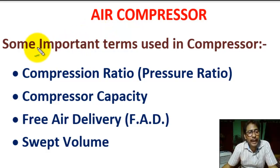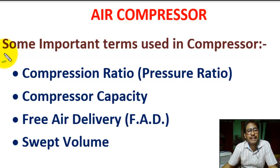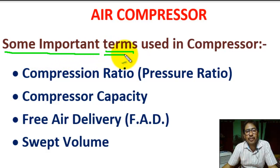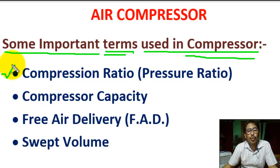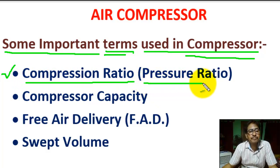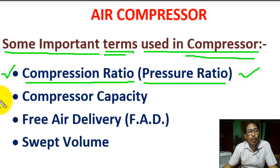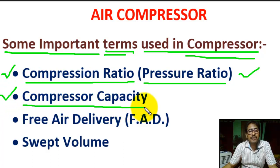Hello students. Today we are going to learn some important terms used in air compressors. Number one: compression ratio or pressure ratio in air compressor. Number two: compressor capacity in air compressor.